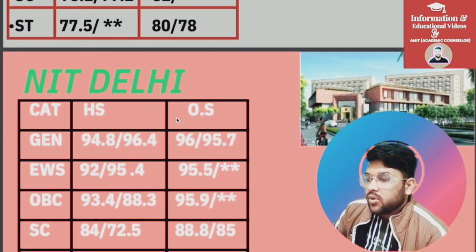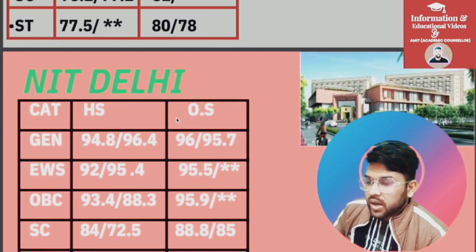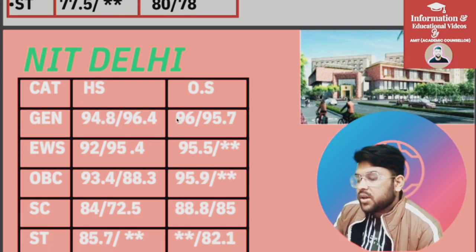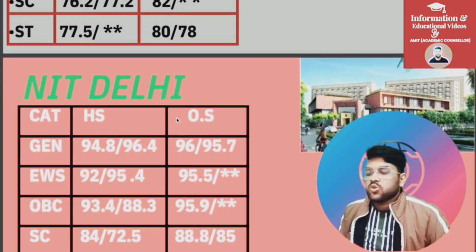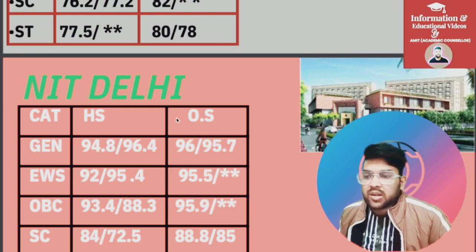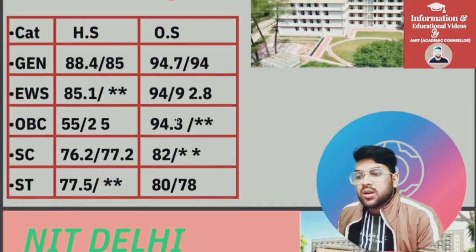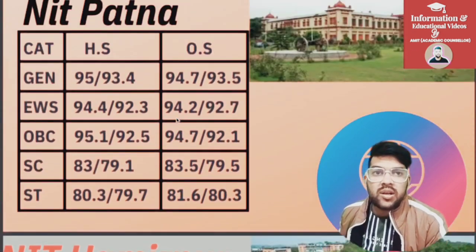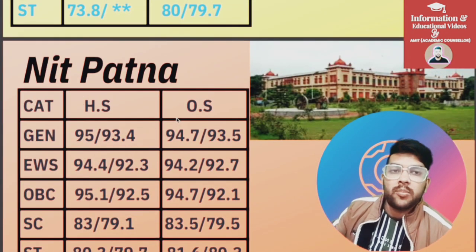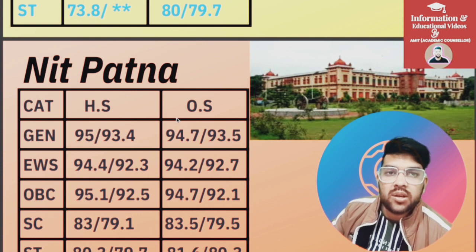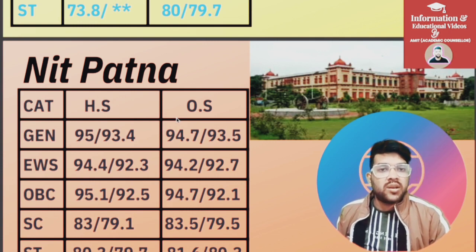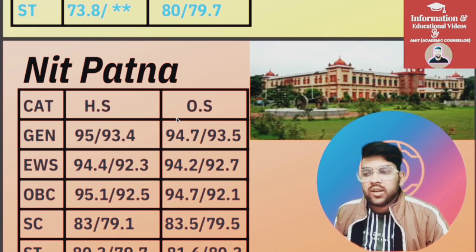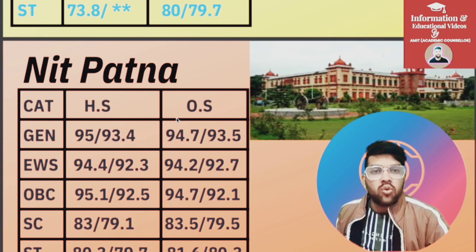For NIT Delhi: General 96, EWS 95.5, OBC 95.9, SC 88 percentile respectively. This was the complete information regarding the minimum percentile needed to enter any NIT college — discussed in detail for every category, male and female, home state and other state.